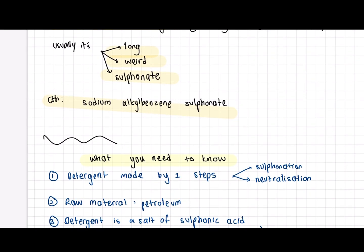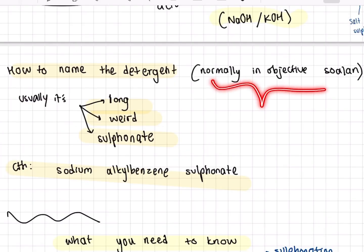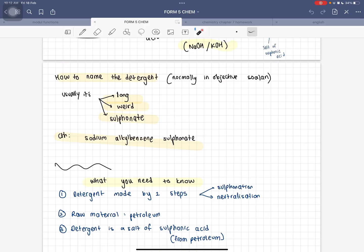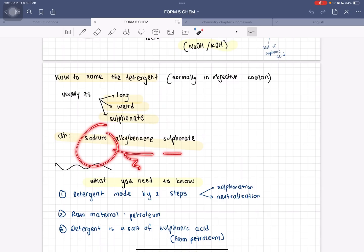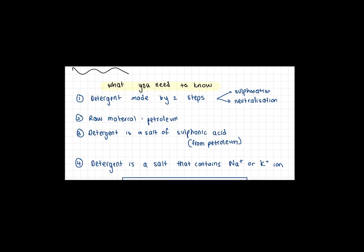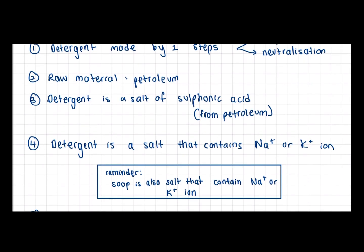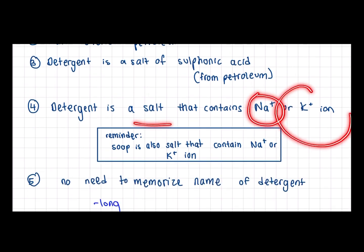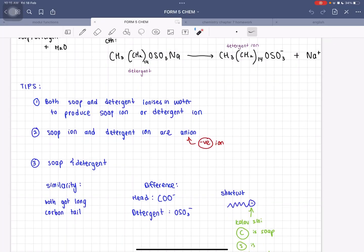How do you name a detergent? There are three things to know, but normally it's found in objective questions — it's usually long, weird, and has the word sulfonate in it. For example: sodium [long name] sulfonate. Detergent is made by sulfonation then neutralization. The raw material is petroleum, and detergent is a salt of sulfonic acid. Detergent contains sodium or potassium ion, just like soap. Both soap ion and detergent ion are anions — meaning they have negative charges: soap ion is COO⁻ and detergent ion is OSO₃⁻.